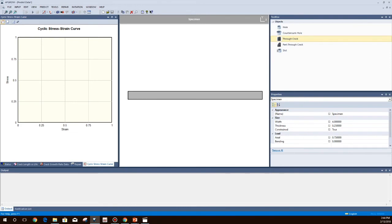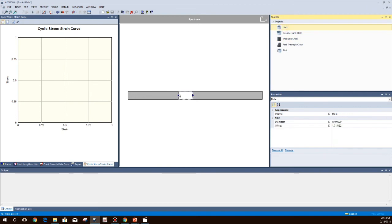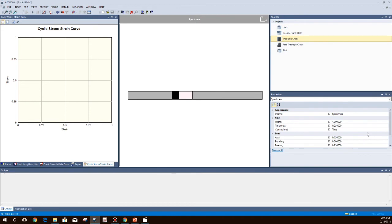To change the load fraction in the advanced model, you would add a hole, then add a through crack. Click in the specimen and in the properties window, you can edit the stress fraction. Please remember that the bearing loading is based on the bearing stress, so make sure the load fraction reflects that.